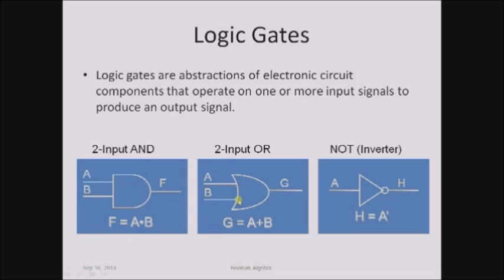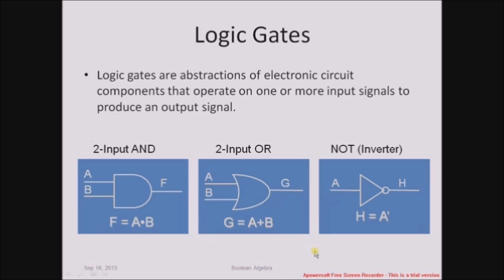The OR gate can also accept more than one input and produces only one output; the output expression is a OR b. The NOT gate accepts only one input and produces one output; the output expression is h = a complement. These are the three basic gates used for realizing any kind of electronic circuit. In the next session, we will deal with Boolean algebra and its properties.